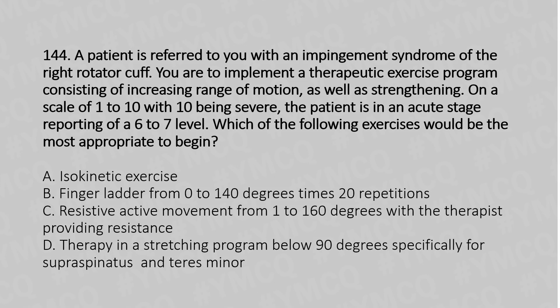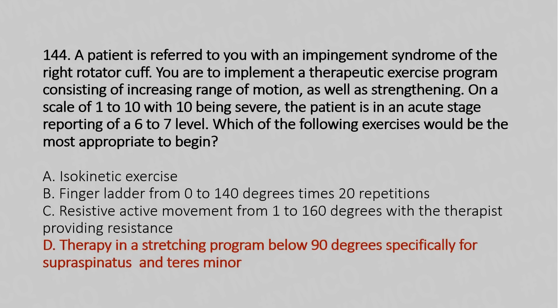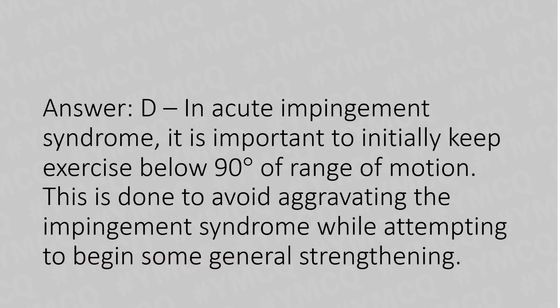And the answer is Option D: Therapy in a stretching program below 90 degrees, specifically for the supraspinatus and teres minor. Explanation: In acute impingement syndrome, it is important initially to keep exercise below 90 degrees of range of motion. This is done to avoid aggravating the impingement syndrome while attempting to begin some general strengthening.